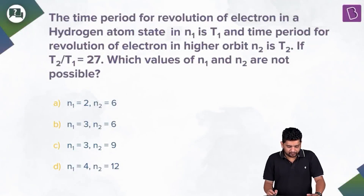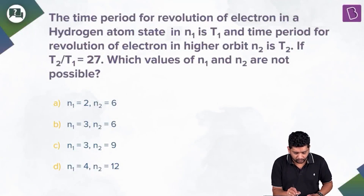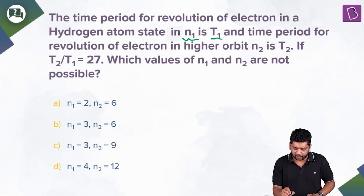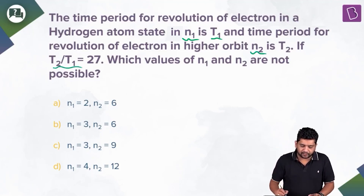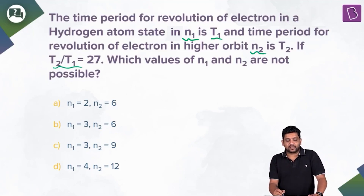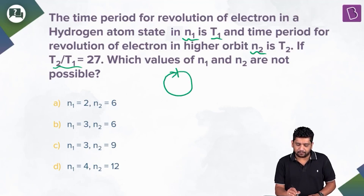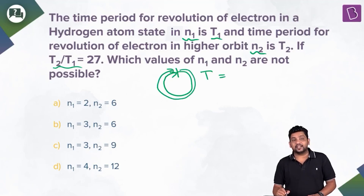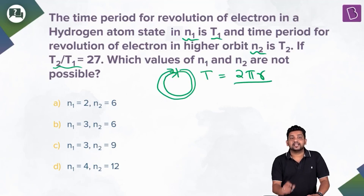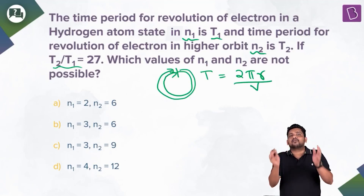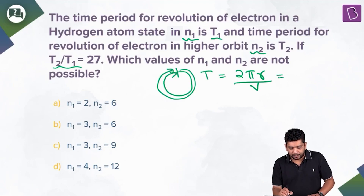This question defines the time period of revolution of an electron in hydrogen atom in state n₁ as T₁, and in higher orbit n₂ as T₂. Given T₂/T₁ = 27, we need to find which values of n₁ and n₂ are not possible. The time period is the total distance divided by speed: T = 2πr / v.